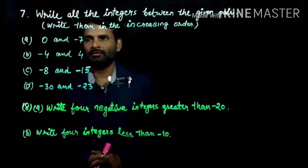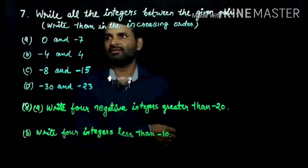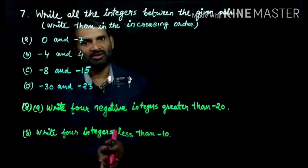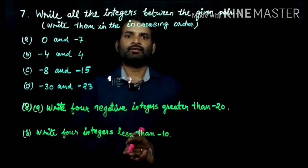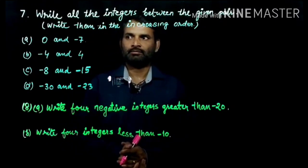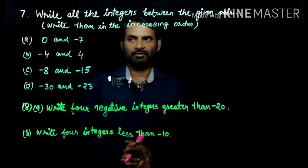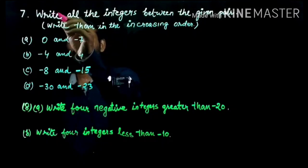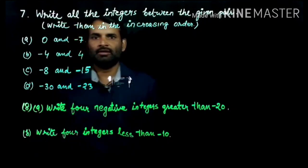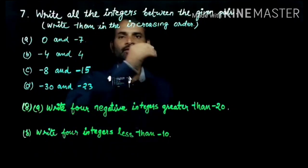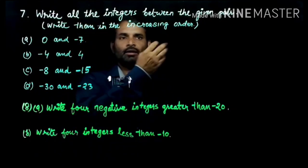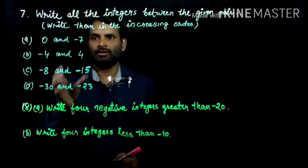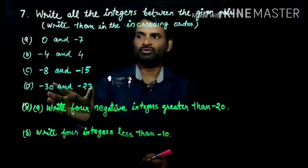Good morning students, today we will start question number 7 from exercise 6.1, the integers. The first question, question number 7 is: write all the integers for the given pair. You have given four questions.